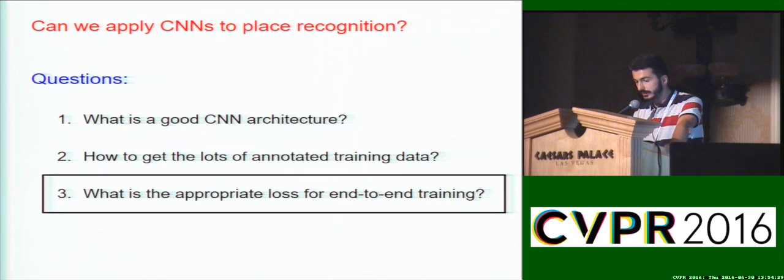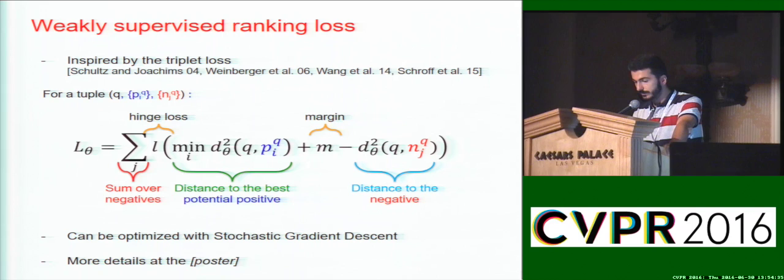We introduce the weakly supervised ranking loss, where in a manner similar to multiple instance learning, we pick the best potential positive in each iteration. Inspired by the triplet loss, we penalize negative images which are more similar to the query than the best positive is. The key thing to note is that the loss can be used easily with CNNs and stochastic gradient descent.